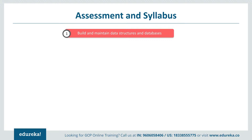Moving to the assessment and syllabus of the Professional Data Engineer certification: the first section is building and maintaining data structures and databases. Topics include future advances in data technology, changes to business requirements, awareness of current state and how to migrate the design to a future state, data modeling, trade-offs, and schema design.